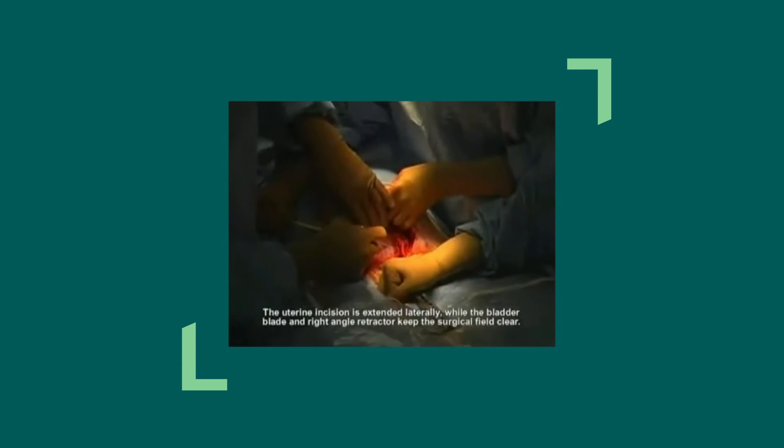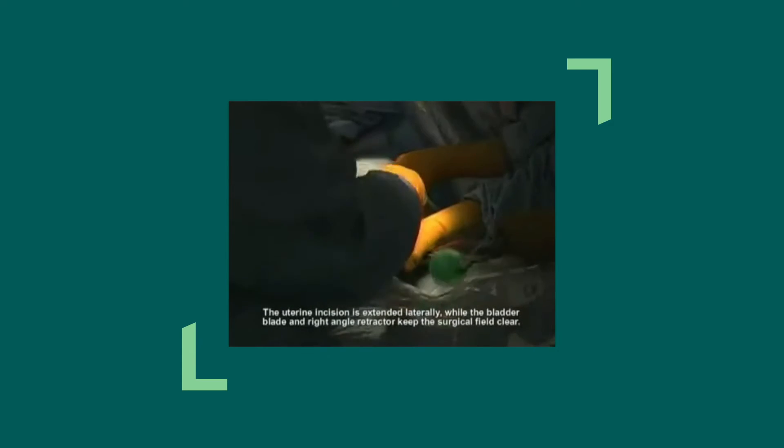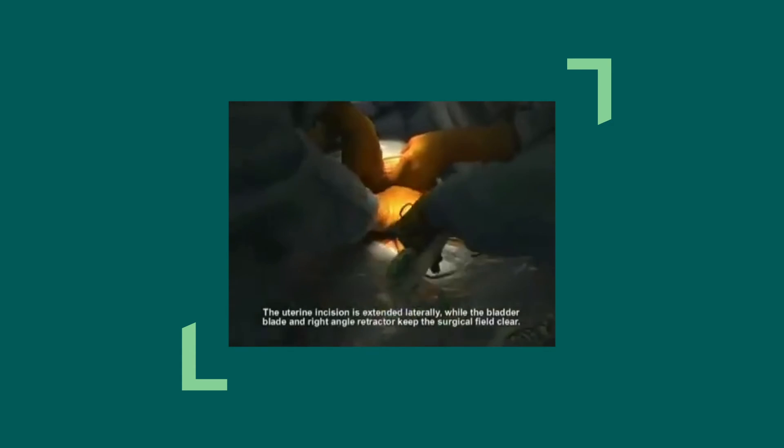The uterine incision is extended laterally while the bladder blade and right-angle retractor keep the surgical field clear and the amniotic fluid is allowed to drain.